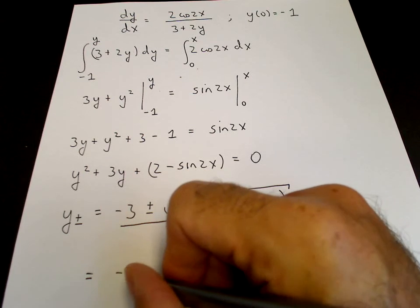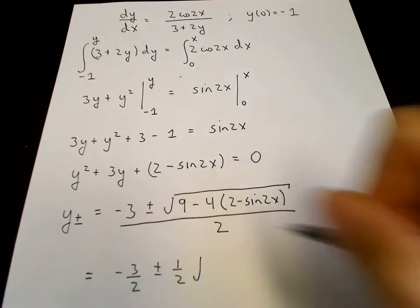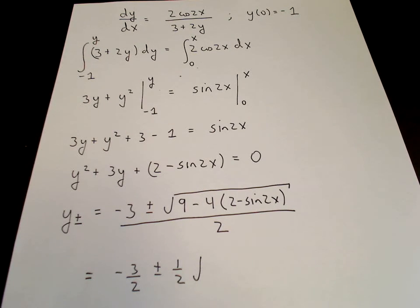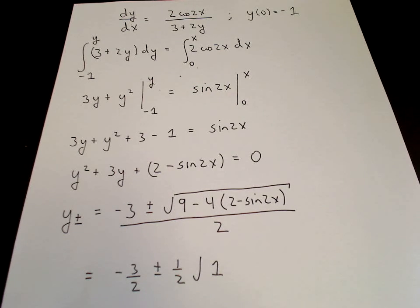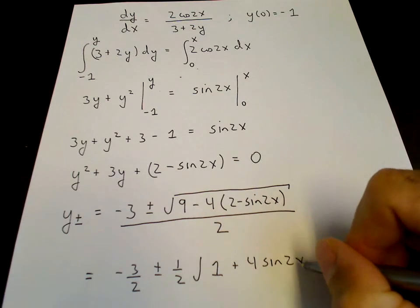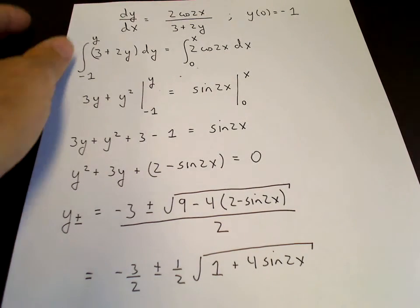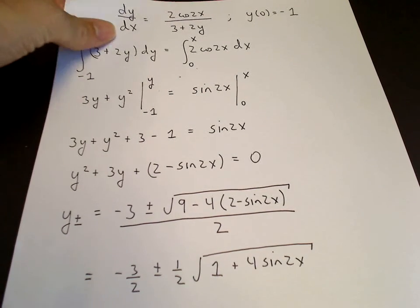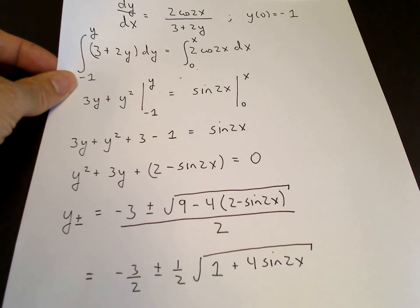Minus 3 halves plus or minus 1 half. And then we have, in the integrand, we have a 9 minus 8, which is 1. And then a minus 4 times a minus sin2x is a plus 4 sin2x. So that's the solution to the differential equation.